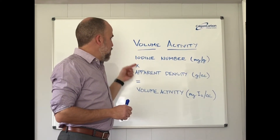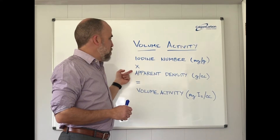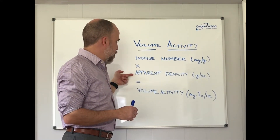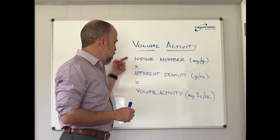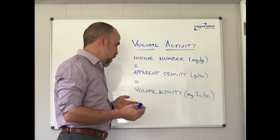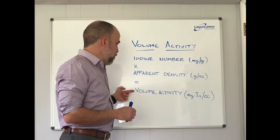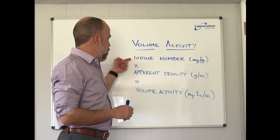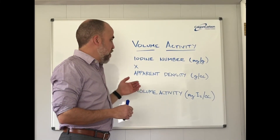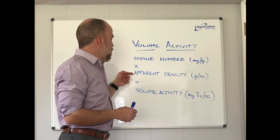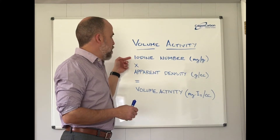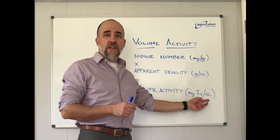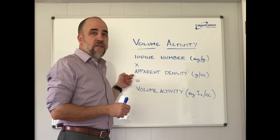Where this shakes out is that you can then in the specification say that if you have a high density carbon with a lower iodine number, the volume activity — total activity per bed — is actually on the same footing. So you can shift these two parameters, and it provides more value to your customer, simply because you're not just applying a high iodine number that is never realized in the bed volume because the density is low.